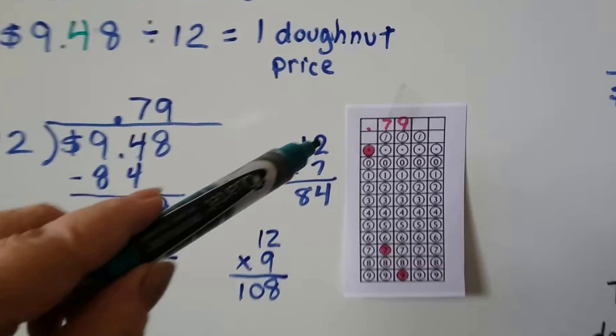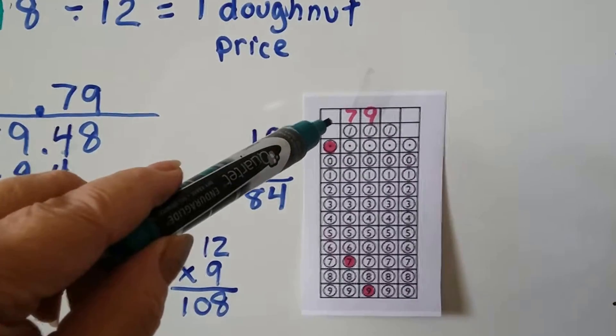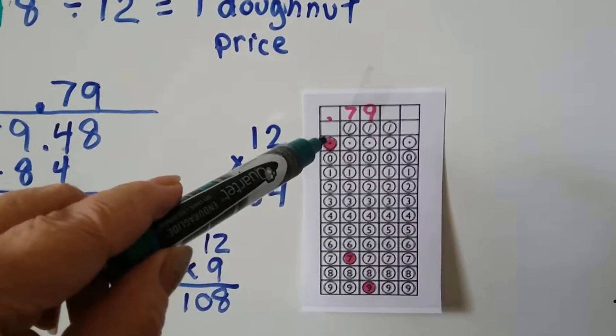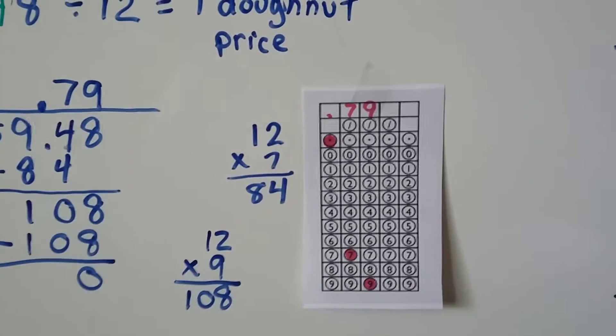And we write it in the standard grid. We put our dot for our decimal point and we fill in that circle and our 7 and our 9.